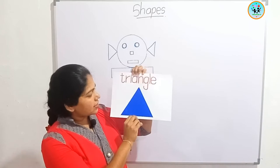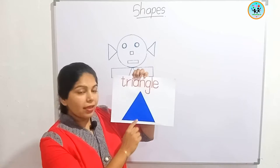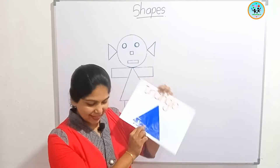This shape is a triangle. Triangle. What is this shape? Triangle.